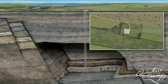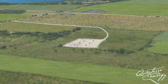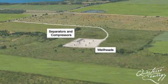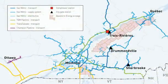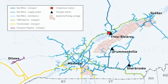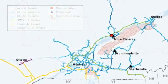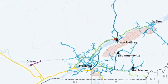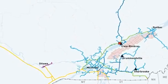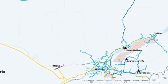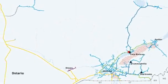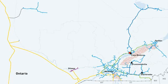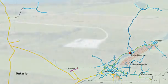Once the drilling and completion operations are finished, the production equipment is installed and the surrounding land is restored. A pipeline is then built to transport the gas to Quebec's extensive pipeline network. Utica shale gas is very clean, so it doesn't have to be processed before entering the pipeline system, which reduces overall emissions. As field development expands, additional pipeline is built.